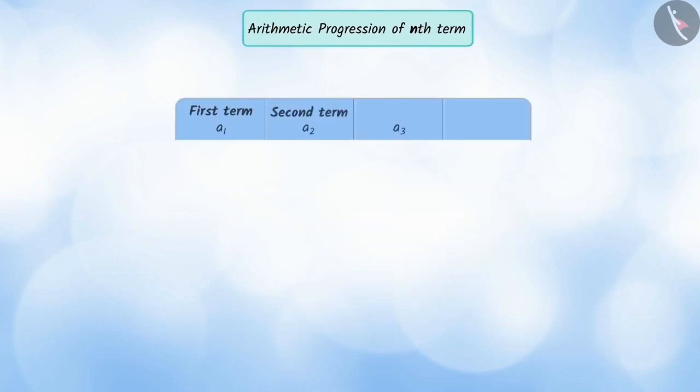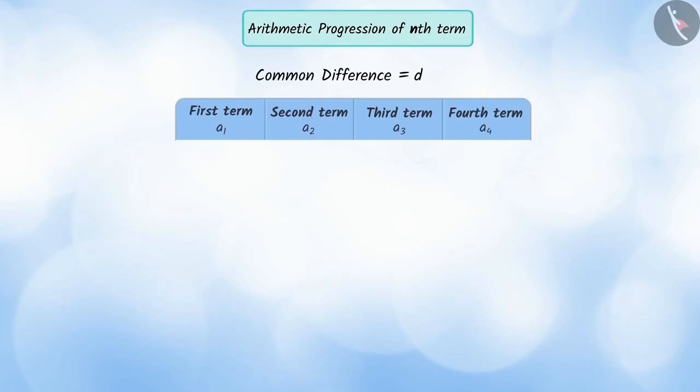Let us assume that a1 is the first term, a2 the second term, a3 the third term, and a4 the fourth term of an AP whose common difference is D.